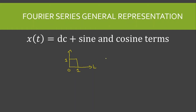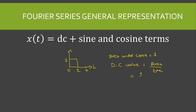To find the DC value, we find the area under the curve divided by the total time. In this case the area under the curve is 1 (1 × 1 = 1) and the total time is 2 seconds, so the DC value is 1/2.